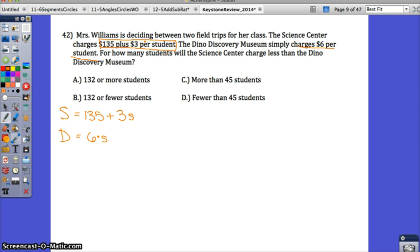Since I have two S's here, I'm going to change this to C for center. So here's my system and S is going to stand for the number of students going on the trip.